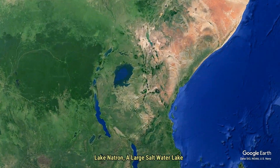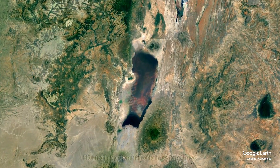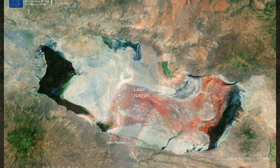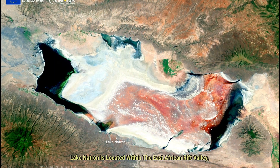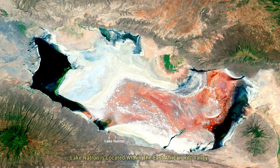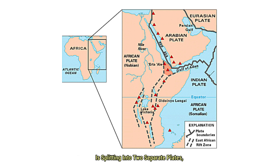Lake Natron is a large saltwater lake situated in northern Tanzania in eastern Africa. Lake Natron is located within the East African Rift Valley, which is a region where the African tectonic plate is splitting into two separate plates, the Nubian Plate and the Somali Plate.